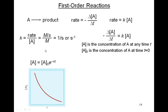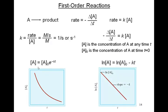If we do some mathematics on this equation, we can convert it into a linear relationship. We're not going to go into the mathematics. Having done those fancy mathematics, we get the natural log of A — the concentration of A at some time T — is equal to the natural log of A₀, the initial concentration, minus K times T.